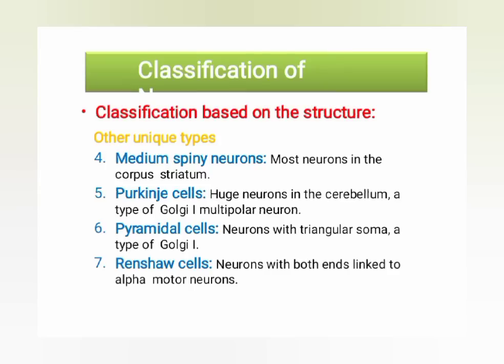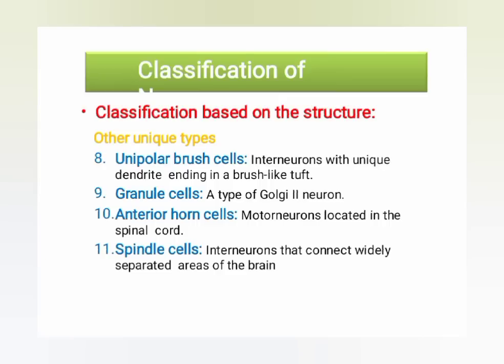The medium spiny neuron is the most common neuron in the corpus striatum. Purkinje cells are huge neurons in the cerebellum and are a type of Golgi type one multipolar neuron. Pyramidal cells have a triangular soma and are also Golgi type one. Renshaw cells are neurons connected to both alpha and motor neurons. Unipolar brush cells are interneurons with unique brush-like tuft dendrites. Granule cells are a type of Golgi type two neuron, and anterior horn cells are motor neurons located in the spinal cord. Spindle cells are interneurons that connect widely separated areas of the brain.